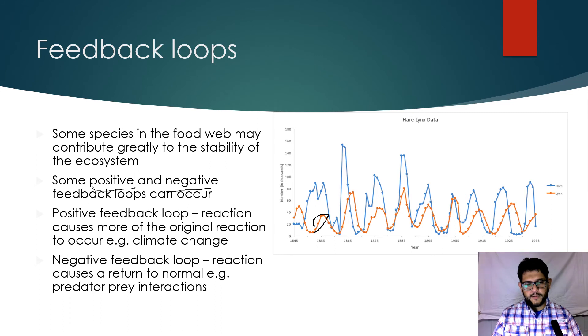But what you notice is when the red line goes up, the blue line drops again. It goes down. That's what we would call a negative feedback loop - it's causing something to occur, so more predators will show up but that is then causing them to eat more prey, so it ends up returning back to the normal or close to it.